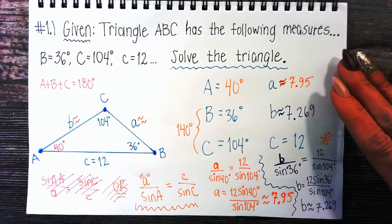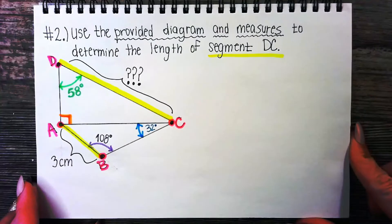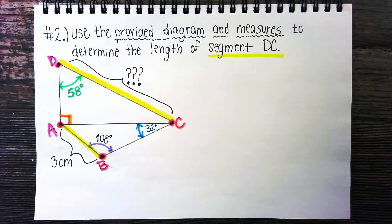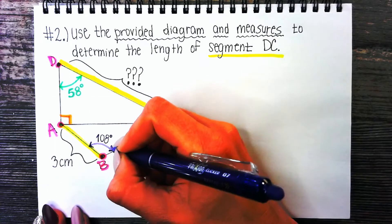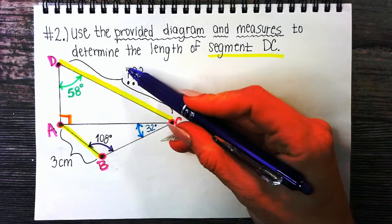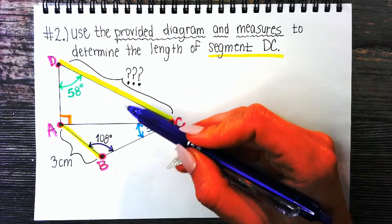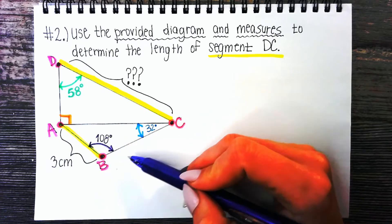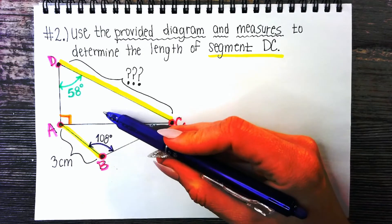Now let's look at problem two. Use the provided diagram to determine the length of segment DC. Here I have two triangles that are attached — they share a side. If you're being asked for DC, and that triangle is attached to triangle ABC, you need to figure something out from triangle ABC before you can find your answer.